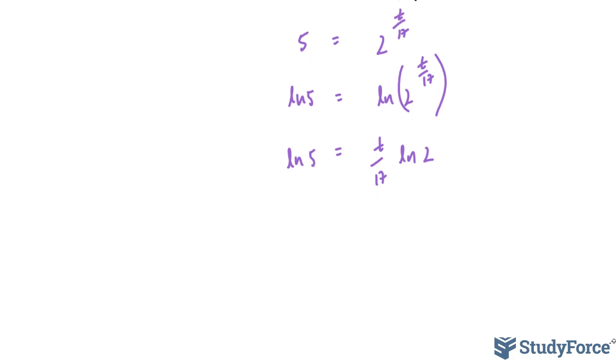We're going to divide both sides by ln 2. Ln 5 over ln 2 is equal to t over 17.